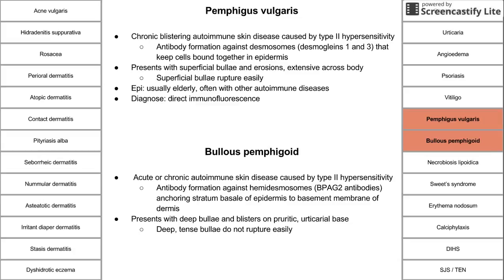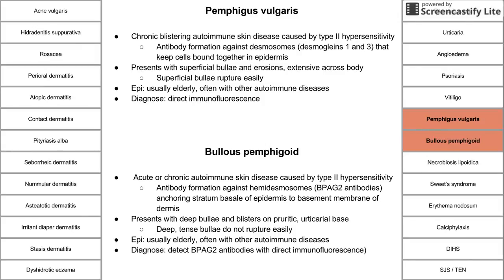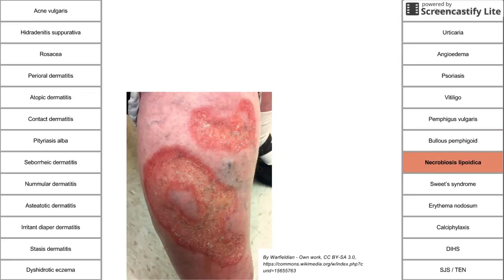In bullous pemphigoid, the blisters do not rupture as easily because the skin surrounding the blister consists of the entire epidermis, as opposed to just part of the epidermis in pemphigus vulgaris. These are deep, tense bullae. It also occurs in elderly people with other autoimmune diseases. Both are diagnosed using direct immunofluorescence to detect the respective antibodies.